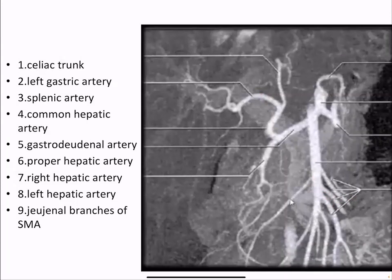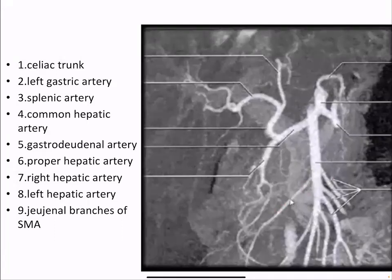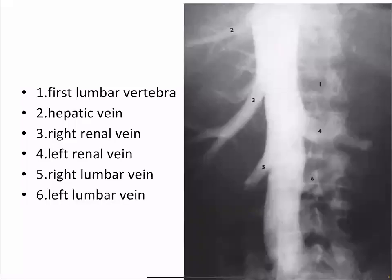In the quiz, structures identified include: the right renal artery, the ileocolic artery on the other side, the first lumbar vertebra, the hepatic vein (number two), the right renal vein (number three), the left renal vein (number four), and the left and right lumbar veins (number five and six).